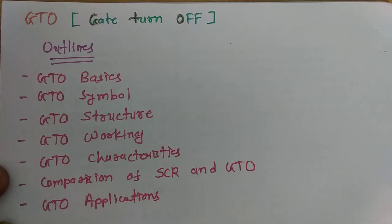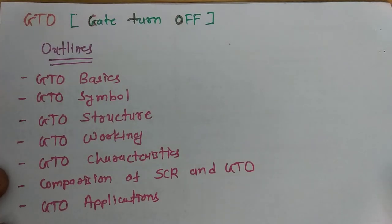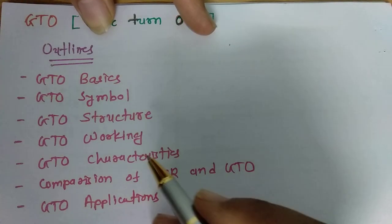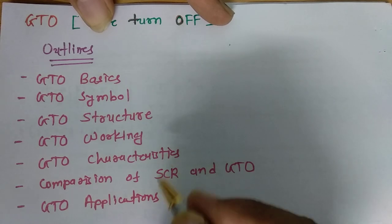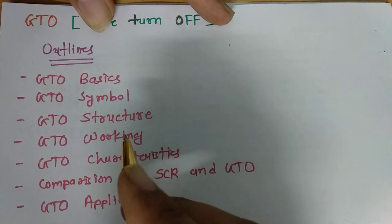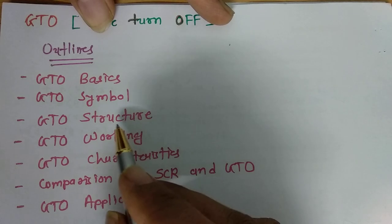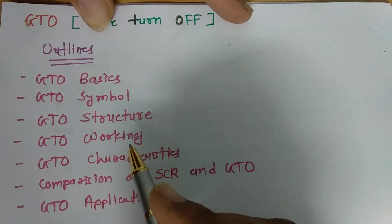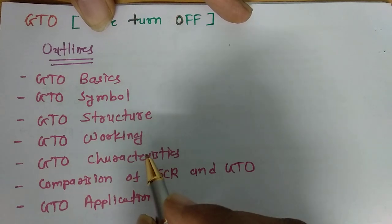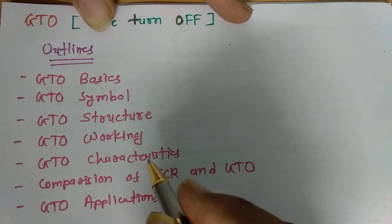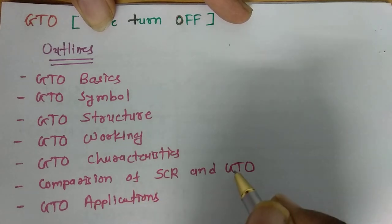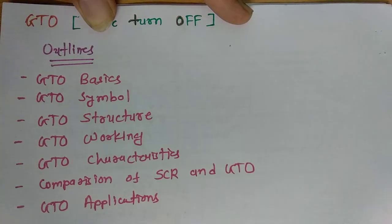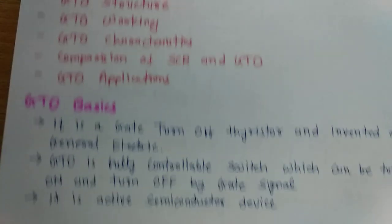In this session, I will be explaining the gate turn-off thyristor. This session is all about GTO, and here are my session outlines: first I will explain the basics of GTO, then the symbol, then the structure, then how GTO functions, then the VI characteristic, then a comparison between GTO and SCR, and finally applications of GTO.